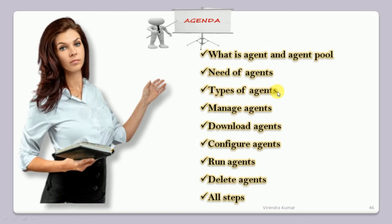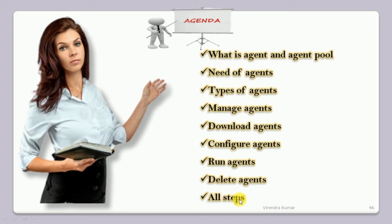Then we will talk about the types of agents — how many types are available in Azure DevOps provided by Microsoft — and how we can manage different types of agents, how we can download custom agents, configure the agents, and run the agents. Finally, how we can delete offline agents which are no longer useful, and I will summarize the steps so you can easily configure agents and the agent pool in Azure DevOps.